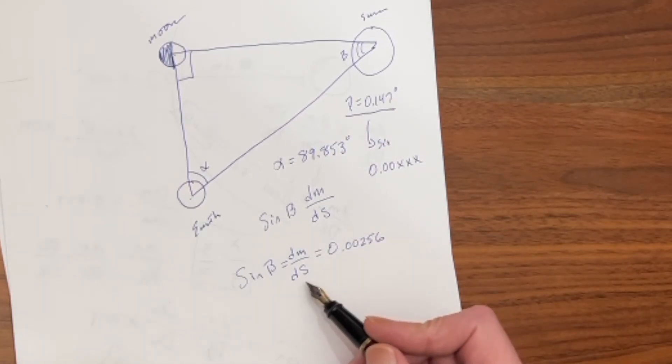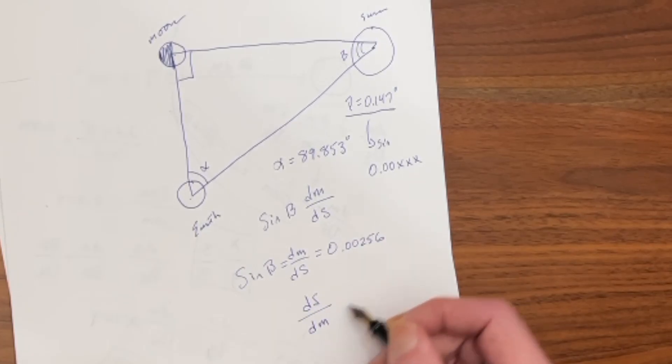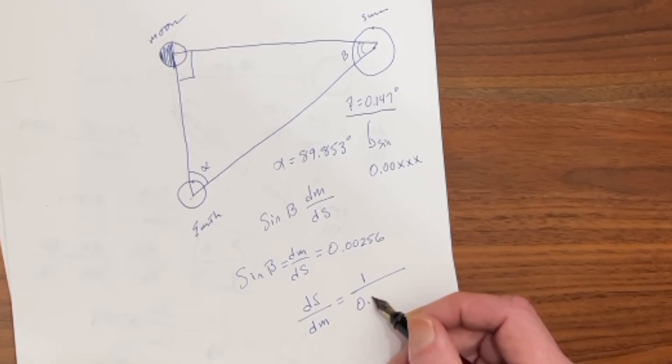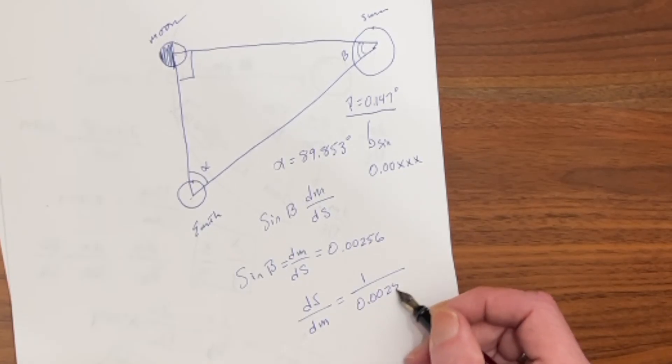What we want to do is describe the distance to the sun in terms of distance to the moon. So we need to go ds over dm, and as a result, we need to divide 1 by 0.256.